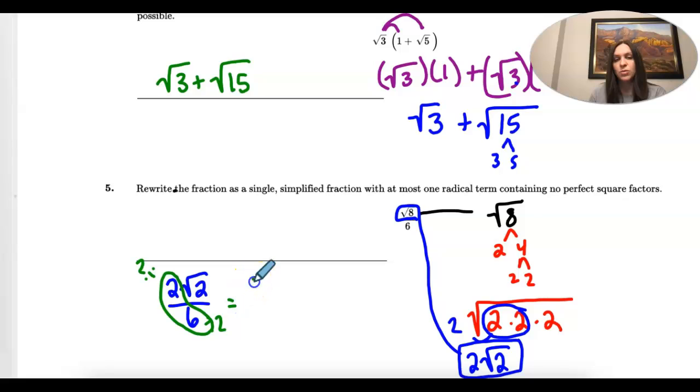2 divided by 2 is 1. The square root of 2 just stays. We can't simplify that anymore. And then 6 divided by 2 is 3. So notice I left the 2 with the square root because when the 2 is under the square root we can't take it out. And we can't reduce that.